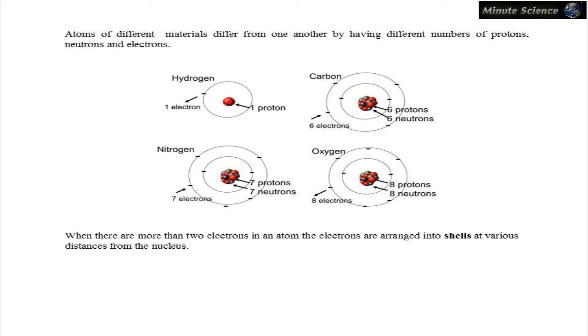When there are more than two electrons in an atom, the electrons are arranged into shells at various distances from the nucleus.